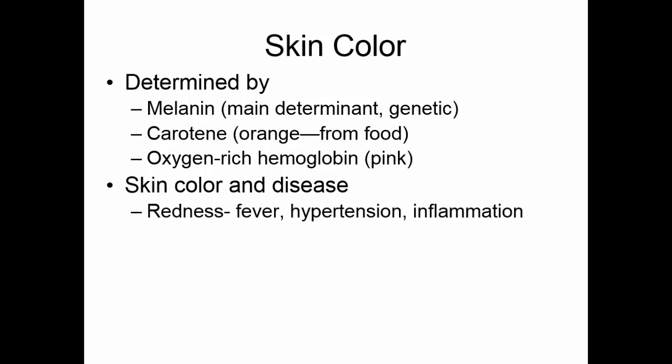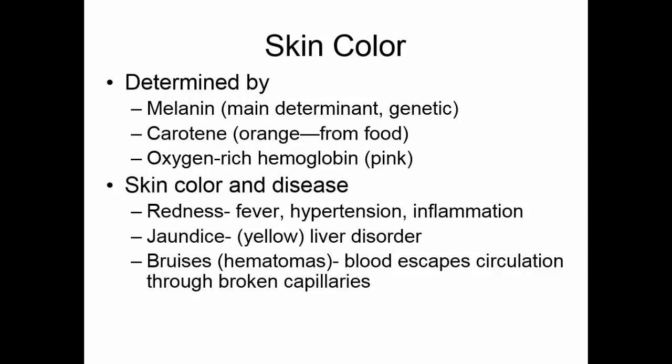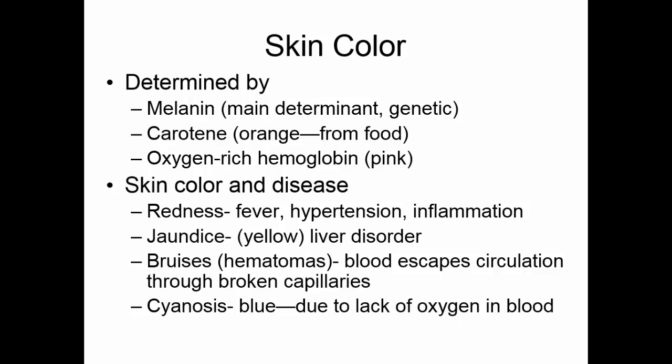There are some abnormal skin colors that can indicate disease. If the skin is unusually red, this means increased blood supply to the dermis, which can happen in fever, hypertension, or inflammatory response. Jaundice is a yellow discoloration caused when hemoglobin is not properly broken down by the liver — a yellow byproduct called bilirubin circulates in the blood, indicating a liver disorder. Bruises, or hematomas, occur when capillaries rupture and blood escapes into the tissue; as hemoglobin breaks down, it turns greenish then yellow before disappearing. Cyanosis is a blue discoloration around the lips and nail beds, indicating inadequate oxygen supply in the blood.